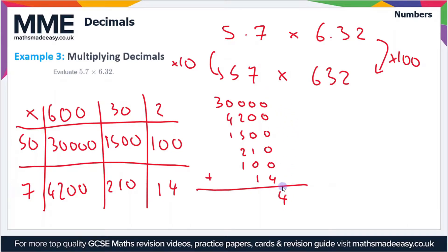So we've got 30,000 plus 4,200 plus 1,500 plus 210 plus 100 plus 14. Let's sum the column on the right, actually it gives us 4, and then the one next to it gives us 2. Then we've got 2 add 5 add 2 add 1 which is 10, so we'll carry the 1. Then we get 4 plus 1 plus 1 which is 6, and 3 on its own.